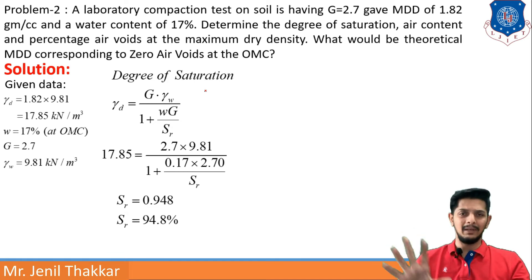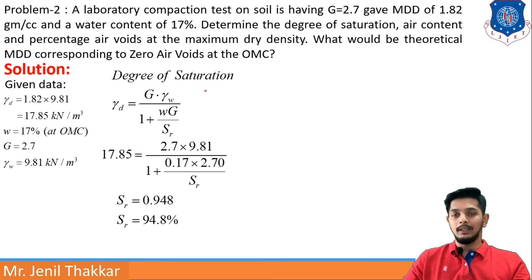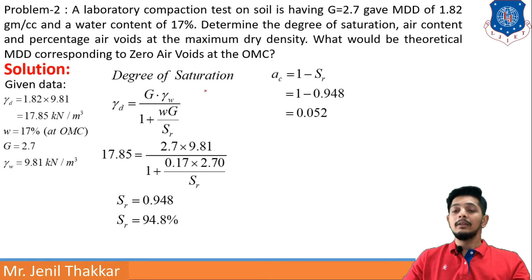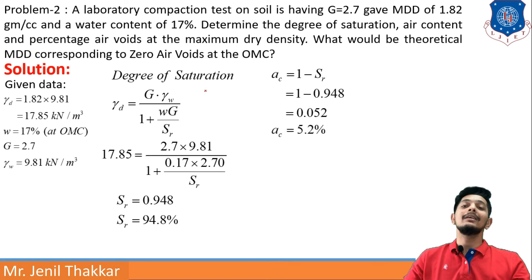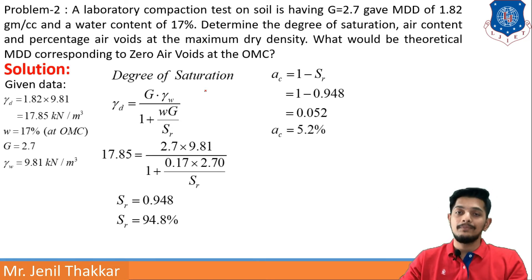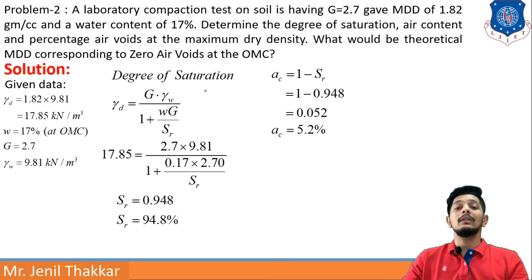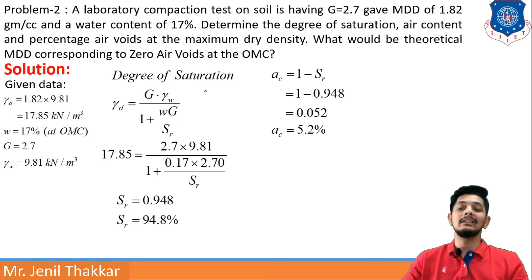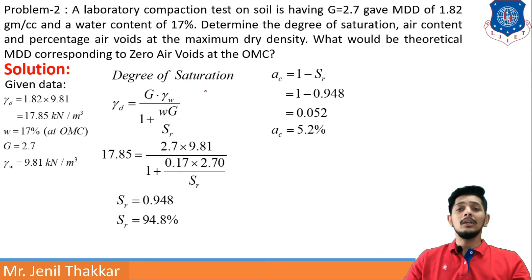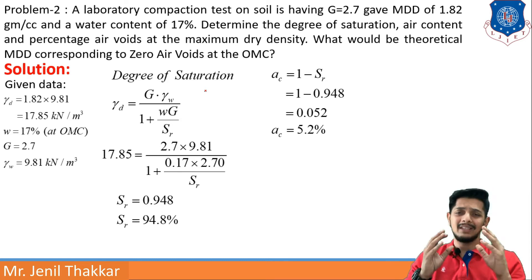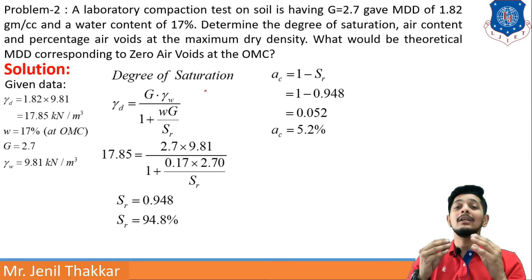Next, air content AC = 1 − Sr = 1 − 0.948 = 0.052, so AC = 5.2%. Essentially 5% is air and 95% is the degree of saturation.